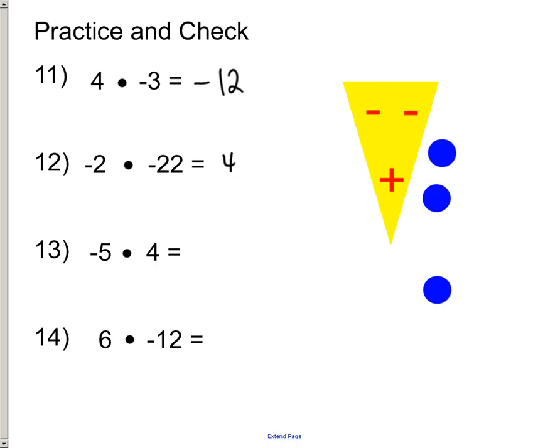2 times 22 is 44. We have two negative numbers multiplying each other, so the answer is positive.